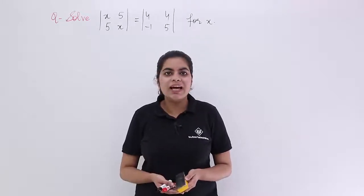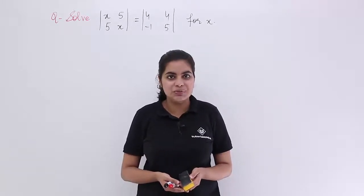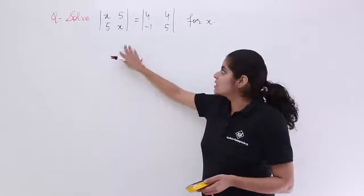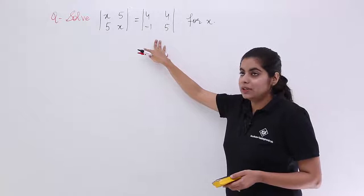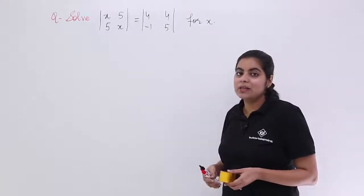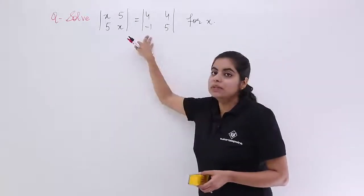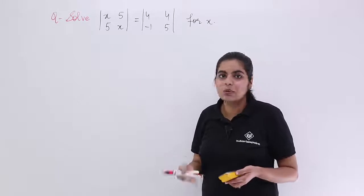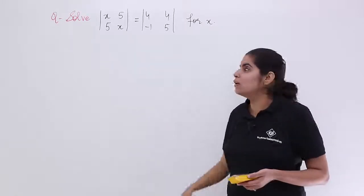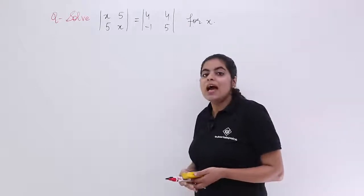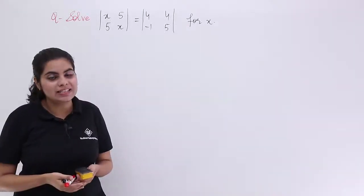Let's see what the question has to say and we'll be getting started with the solution. The question is: solve this determinant is equal to the other determinant for x. That means I have two determinants which are equated in the question itself, but there is some unknown, and that unknown is x. I need to solve the determinant for that x.